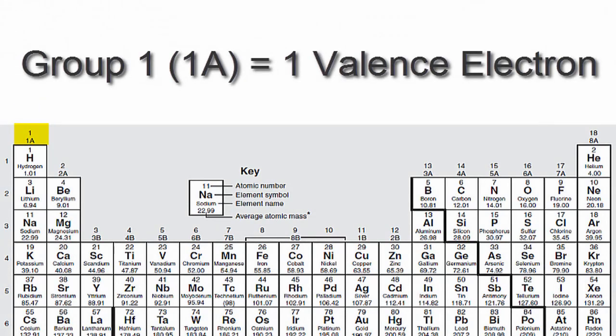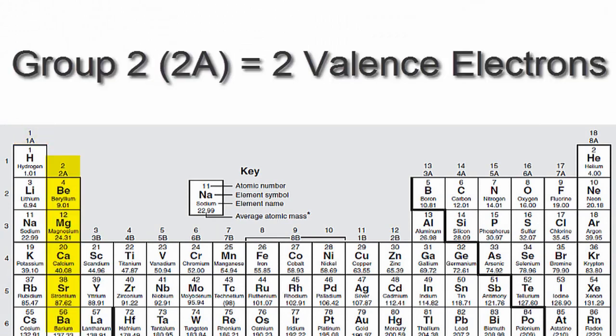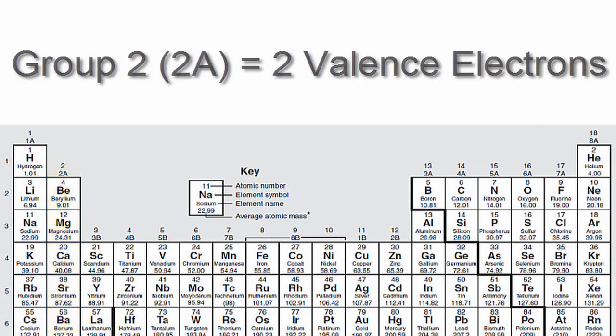hydrogen has one valence electron because it's in group 1, sometimes called 1A. If you look at group 2 or 2A, you'll see that those elements have two valence electrons.